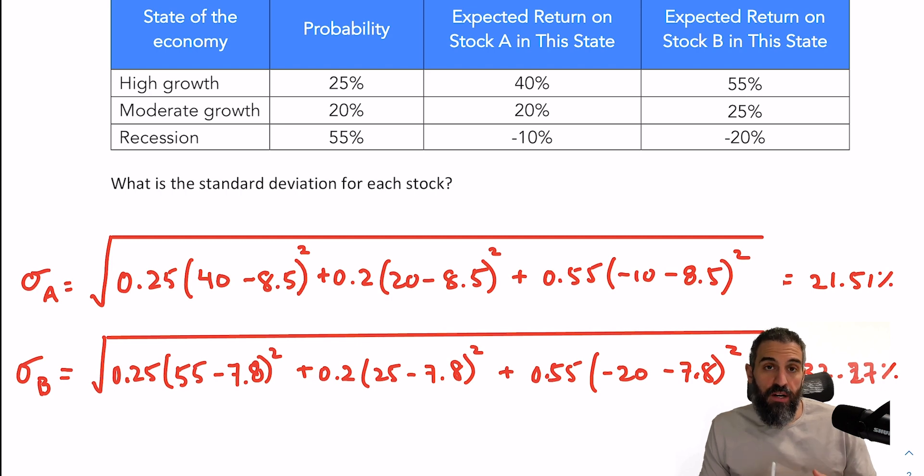That should give you 32.27%. Now I'm going to remind you that if you're not familiar with these formulas, make sure you check out my other videos where I describe the concepts of expected return, standard deviation, and so on.